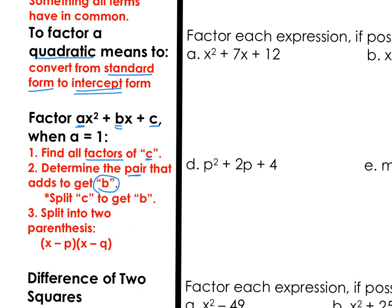So you'll commonly hear me say split the c to get the b—split the value for c into two numbers that would add to get b. Once you know the numbers that do that, the x² term will always separate into x times x for us. It seems like a lot right now, but let's try some examples.